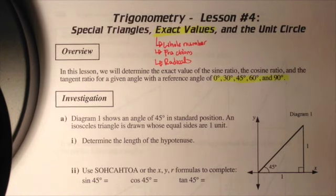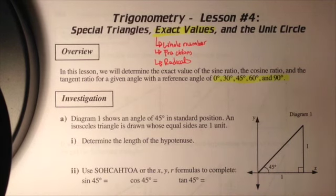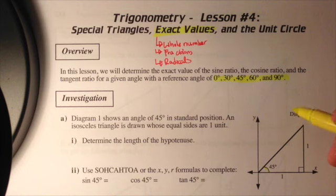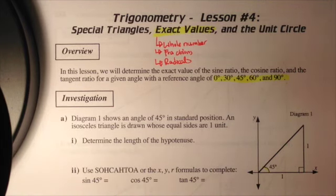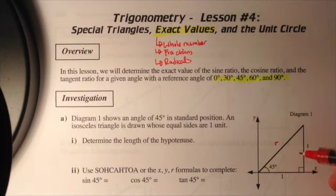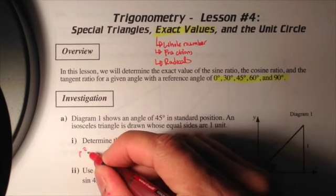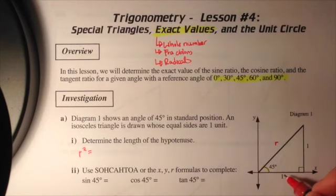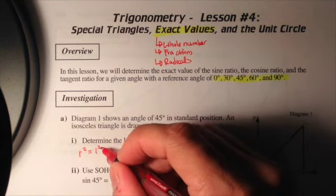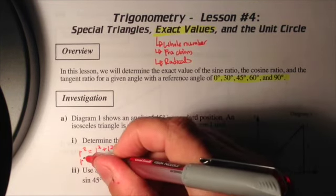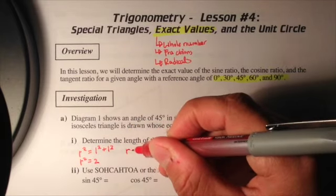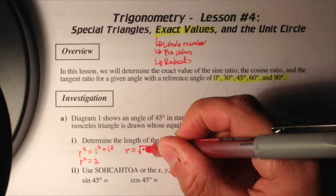Let's look at the first example. Diagram one shows an angle of 45 degrees in standard position. It's an isosceles triangle whose unit sides are one unit. An isosceles triangle is a triangle which has two equal sides. The first thing we need to do is determine the length of the hypotenuse using the Pythagorean theorem.